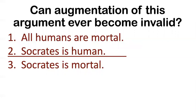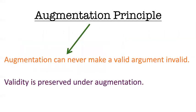Any possible way you can make the argument invalid by augmentation — the answer is you can't do it. What's interesting about this concept of validity is it's like a tipping point. If you ever get an argument with enough information in the premises that the conclusion must be true, then you can never undo that by augmenting it with more premises.